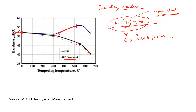The hardness increases because molybdenum, vanadium, and niobium are strong carbide formers. They form carbides such as molybdenum carbide and vanadium carbide, and these carbides make the steel harder.